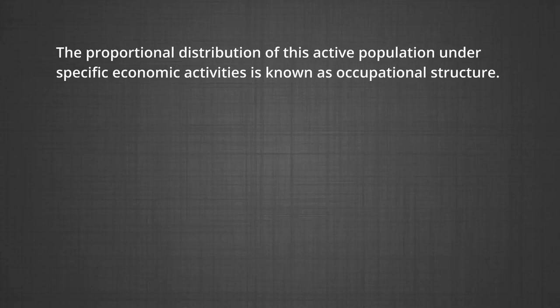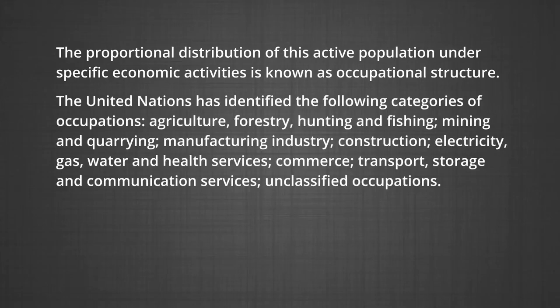The final aspect of population composition is its occupational structure. The economically active section of the population is generally defined as those engaged in remunerative occupations. Children below working age, old people, retired persons, housewives and students not engaged in economic pursuits are excluded from the active population. The proportional distribution of this active population under specific economic activities is known as occupational structure. The United Nations has identified the following categories: agriculture, forestry, hunting and fishing, mining and quarrying, manufacturing industry, construction, electricity, gas, water and health services, commerce, transport, storage and communication services, and unclassified occupations.